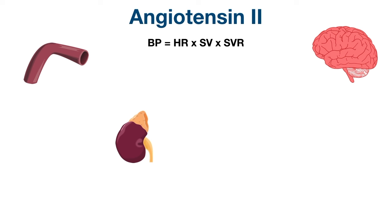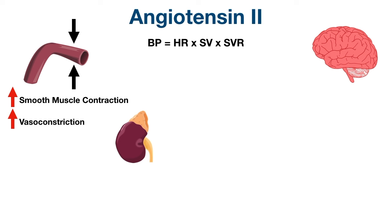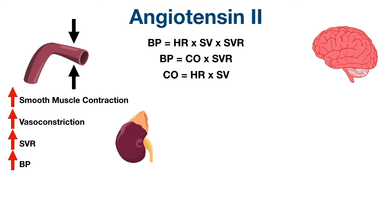Angiotensin 2 has several tricks to increase blood pressure. First, it's a potent vasoconstrictor — angiotensin receptors on blood vessels cause increased vascular smooth muscle contraction, leading to vasoconstriction and increased systemic vascular resistance, also known as total peripheral resistance. From the blood pressure equation — cardiac output times systemic vascular resistance, where cardiac output equals heart rate times stroke volume — increasing systemic vascular resistance increases blood pressure.